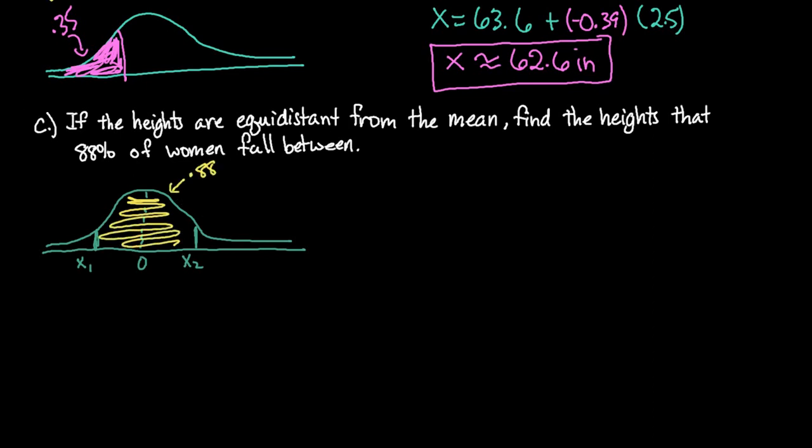So what I'm going to do first is find the negative z-score so I'm going to find this one. So I'm going to need to find the area that is to the left of this lower value so to do that I would do 1 half of 1 minus 0.88, the area in between. And the reason that I'm doing that is 1 minus 0.88 will give me the area in these two tails so that would be 0.12 and then I would take half of that which would be 0.06. I'm just going to find this z-score and then I know that the z-score for the second one is just going to be the opposite.